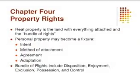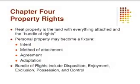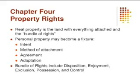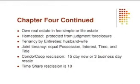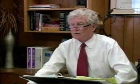In the chapter four review: Real property is the land and everything attached and that bundle of rights. Personal property may become a fixture through either the intent of the parties, the method of attachment, agreement, or adaptation. The bundle of rights includes disposition, enjoyment, exclusion, possession, and control. To own real property in fee simple or a life estate are the most common — fee simple is the most common. The homestead is protected against judgment foreclosures, and it also protects a spouse in terms of inheritance.